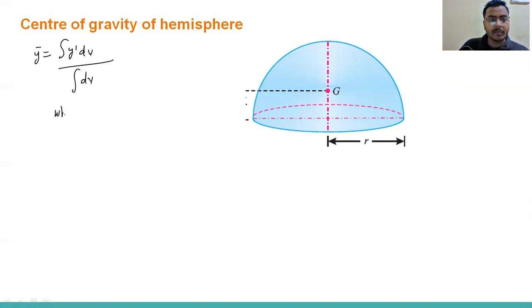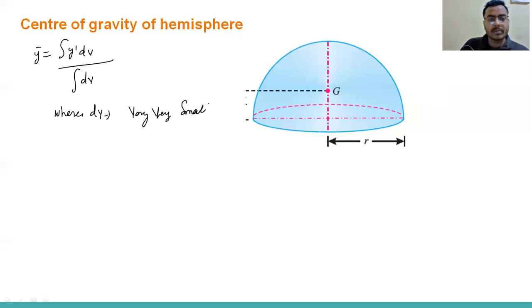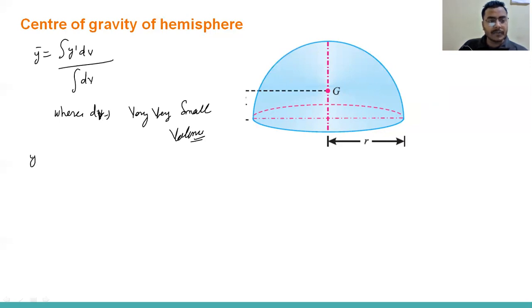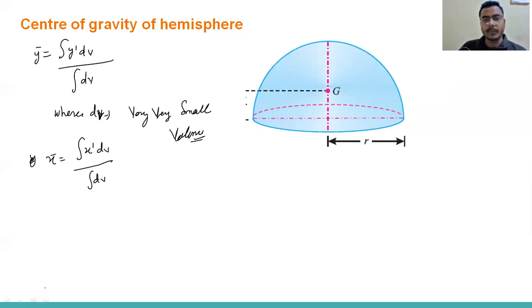So y-bar equals integration of y-dash dV divided by integration of dV, where dV is a very small volume. Similarly, we can write x-bar equals integration of x-dash dV divided by integration of dV. We will use this formula to calculate the center of gravity for the hemisphere.